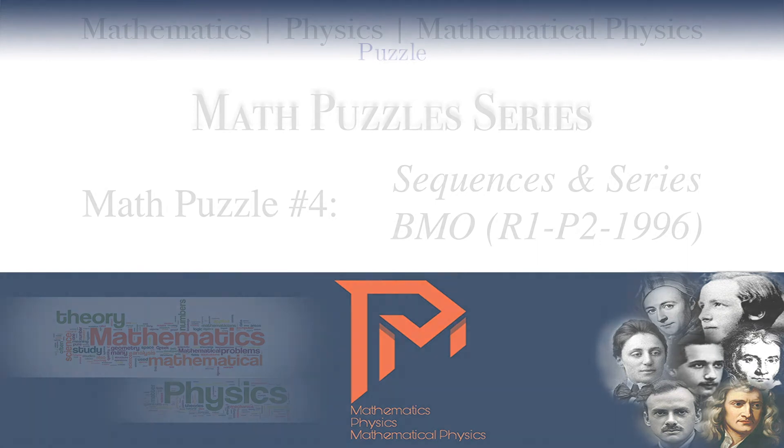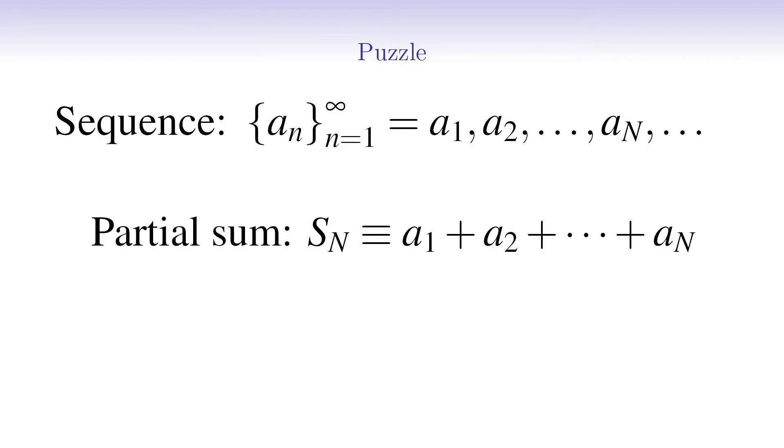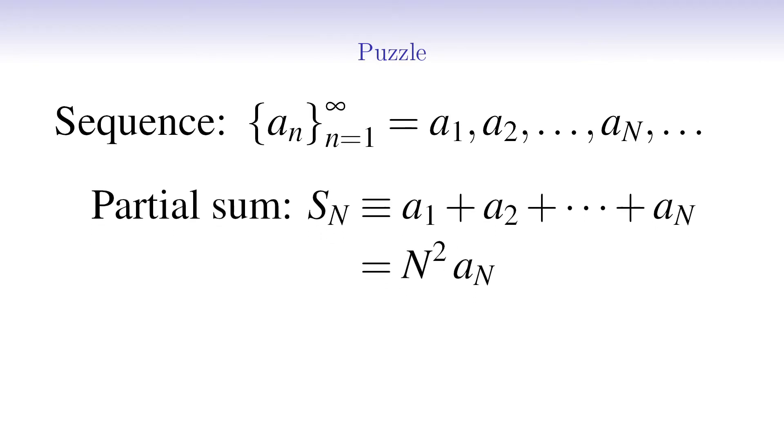Let's see what we must do. In this puzzle, we are given a sequence called AN. The partial sum of the sequence is called SN, and it obeys the following relation. Given that the first term in the sequence is equal to 1996, we are asked to find the 1996th term in the sequence. This puzzle is the second problem from the first round of the British Mathematics Olympiad in 1996. Please give yourself a few minutes to solve this problem.